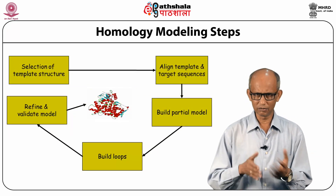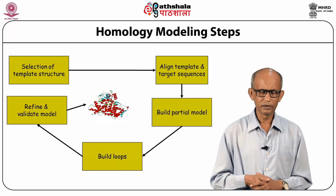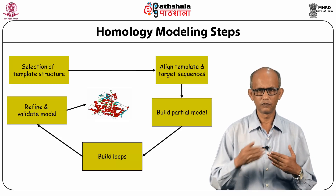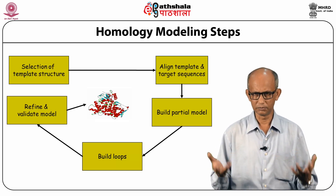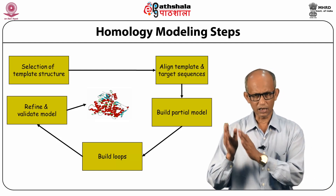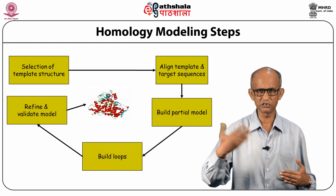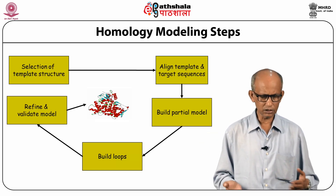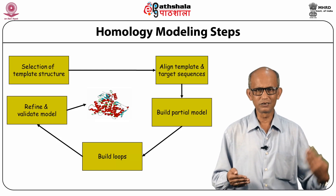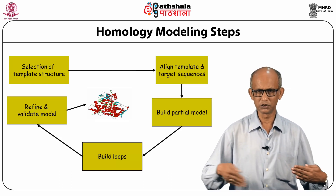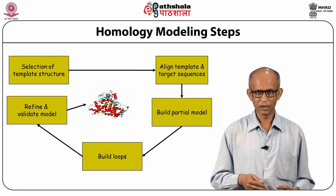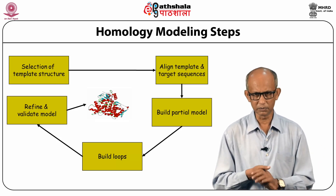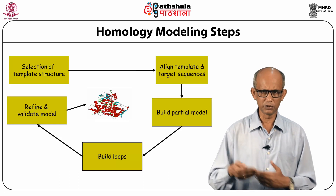The steps in homology modeling are as follows: given your unknown sequence, you first search for a good template protein. The template must be one whose structure is known, so you look at structural databases, take all those proteins, and align your sequence with the sequences of those proteins whose structures you know. If you find something with greater than 30% identity, those can be used as a template.